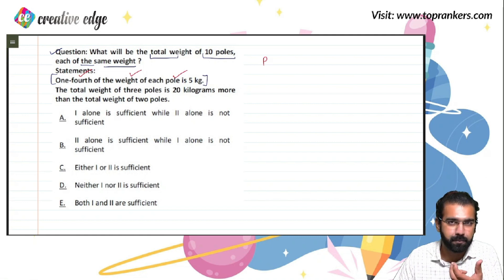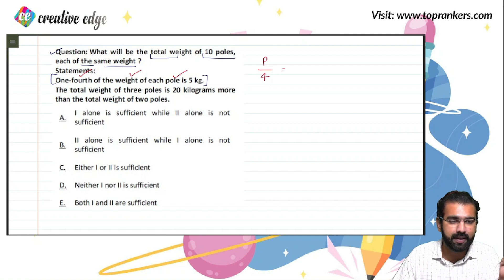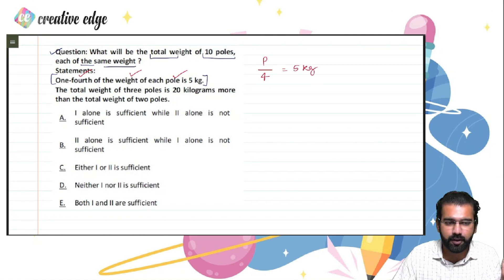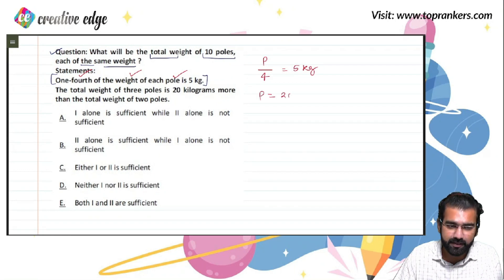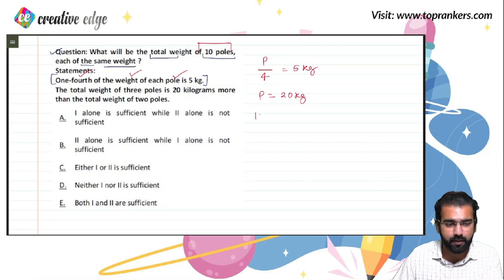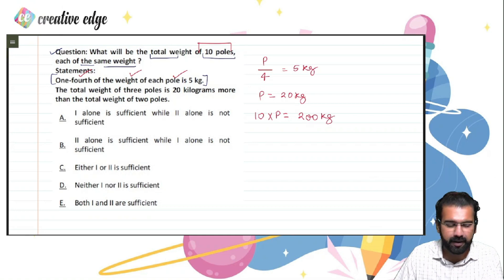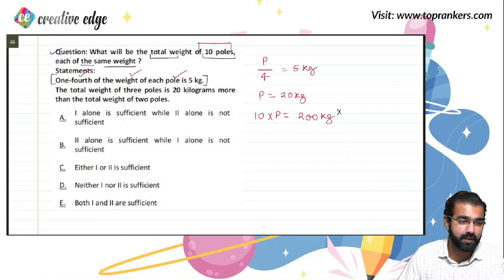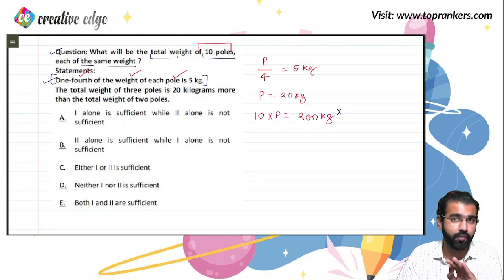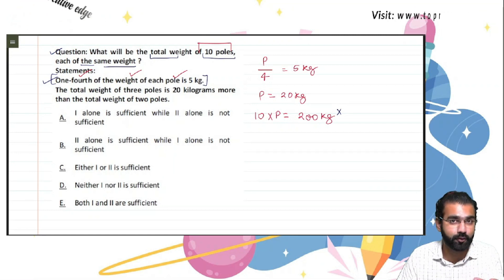If each pole is 20 kg, then the weight of 10 poles is 200 kg. Remember, you need not figure out the answer — you need to figure out whether this data was sufficient or not. And we can very easily say that statement 1 alone was sufficient. We haven't used or read statement 2 yet.